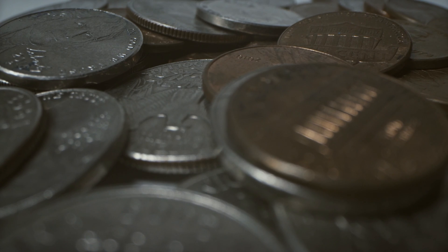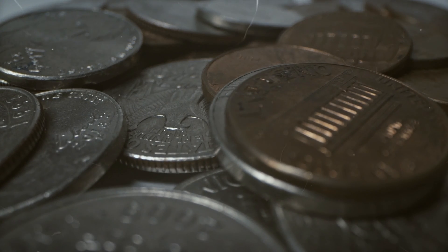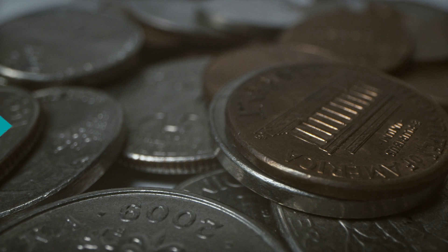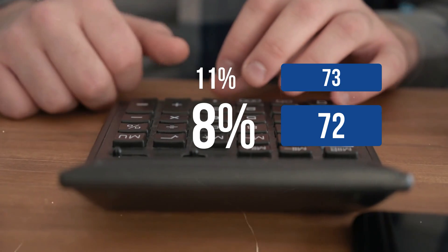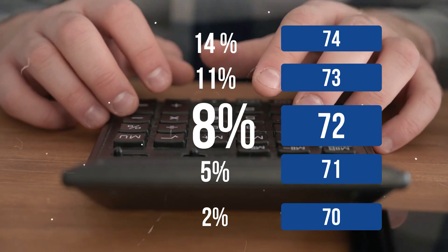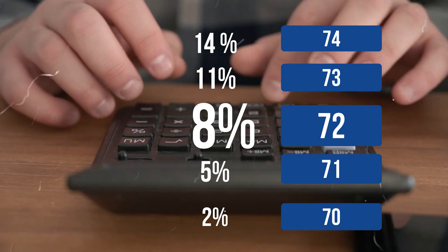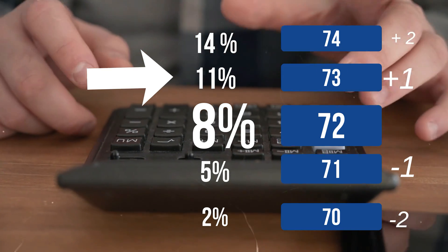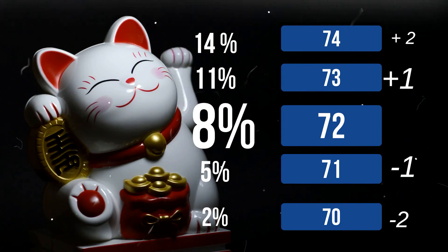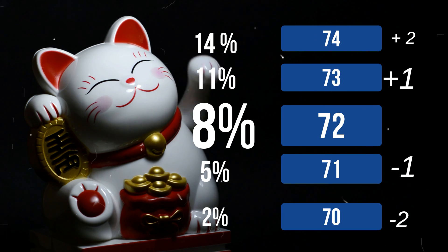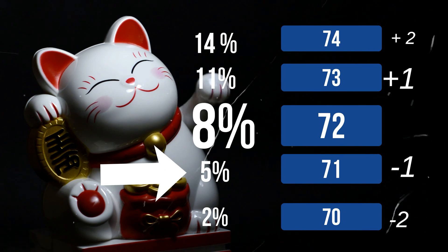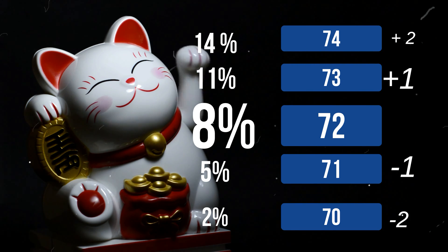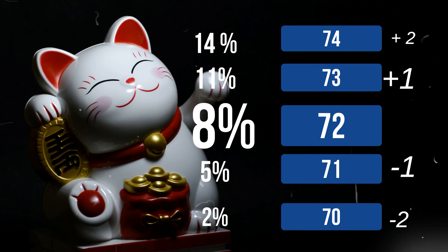So what do you do when the return or interest rate is below or above the 6–10% range? We just need to modify the Rule of 72 slightly. We consider 8% as the midpoint or reference, and for every 3% change we add or subtract 1 from 72. For 11% — three percent more than 8% — use the Rule of 73. For 5% — three percent less than 8% — use the Rule of 71, for a more accurate result.